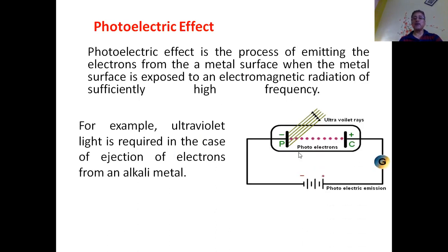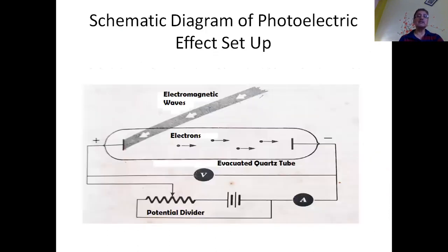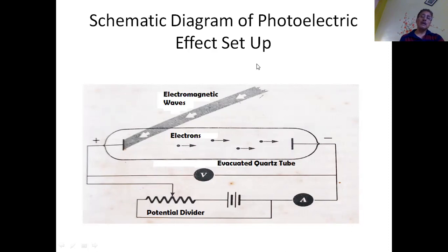Here is a small setup of the photoelectric effect. To understand the experiment elaborately, let us consider this schematic diagram. We have an evacuated quartz tube containing an anode and a cathode, and through the outer circuit a potential divider is applied to maintain a potential difference between them. An electromagnetic wave is irradiated on the anode, and the ejected electrons rush toward the cathode, constituting a current.